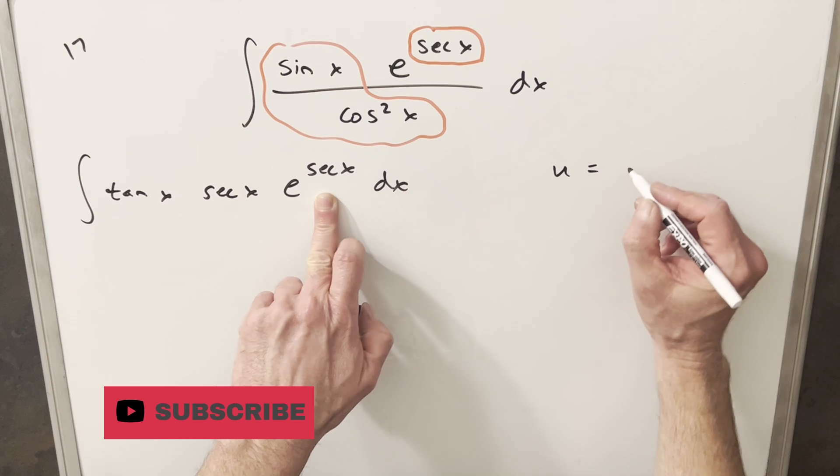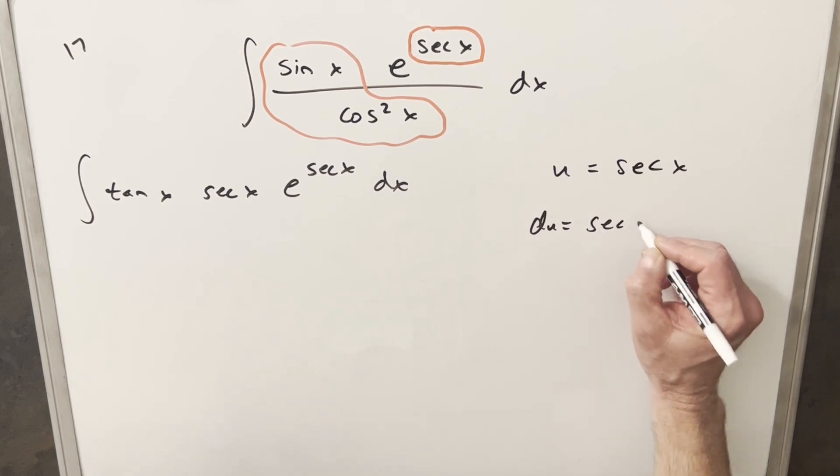So for the exponent, we'll make this substitution u equals secant of x. I'll take a derivative, du is going to be secant x tan x dx. But now we have our du right here just in a different order with the dx. And that's going to be our u. So I'm going to go ahead and make this substitution.